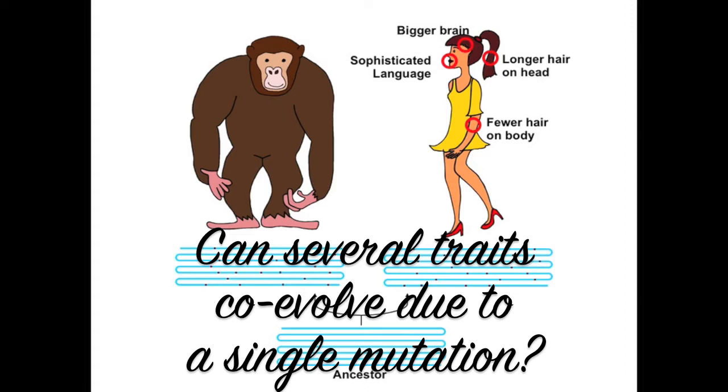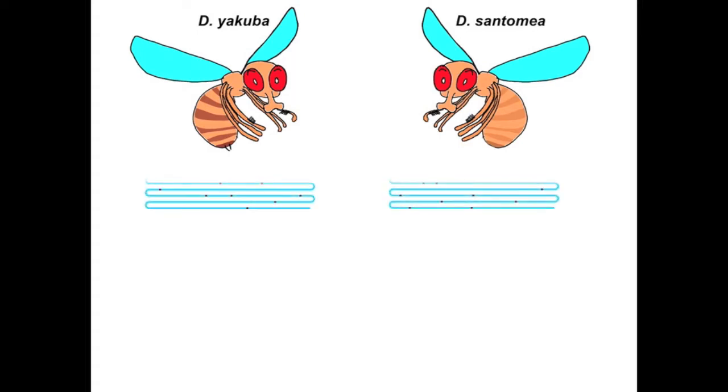As it is difficult to explore such a question in humans and chimpanzees, we decided to turn to two closely related species of fruit flies, Drosophila yakuba and Drosophila santomea. Both species live in Africa, and they co-exist on the island of Sao Tome, off the coast of West Africa. They diverged about a million years ago, and their DNA sequence is extremely similar, and they can produce hybrids in the lab.